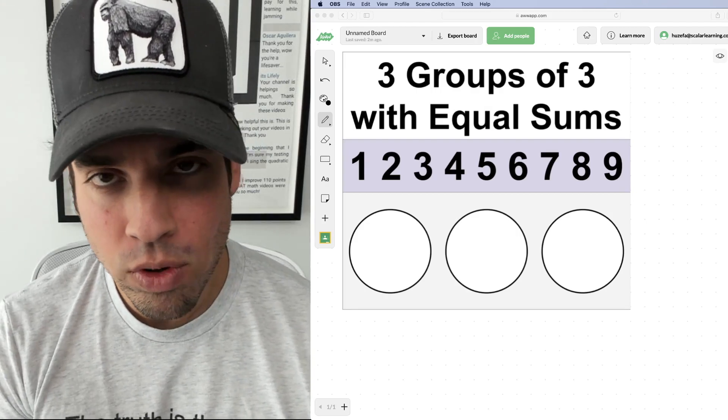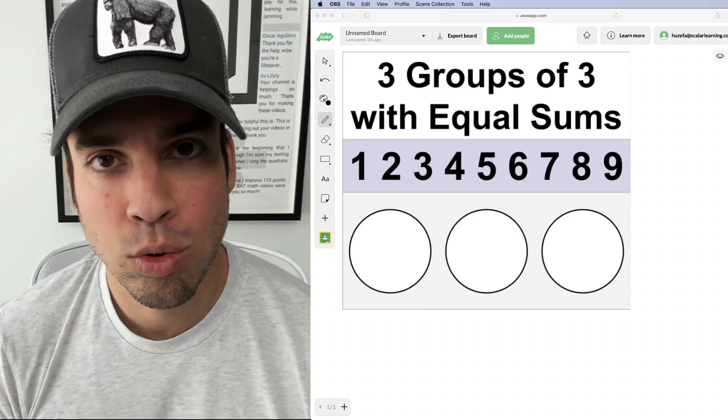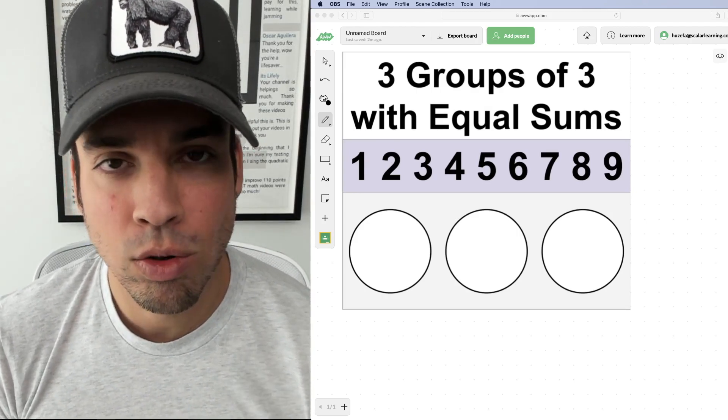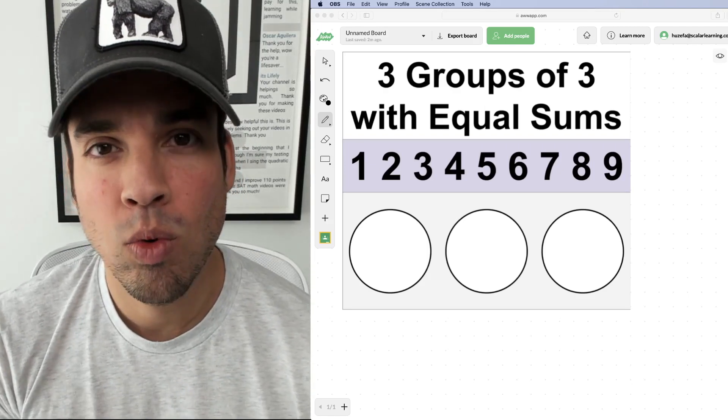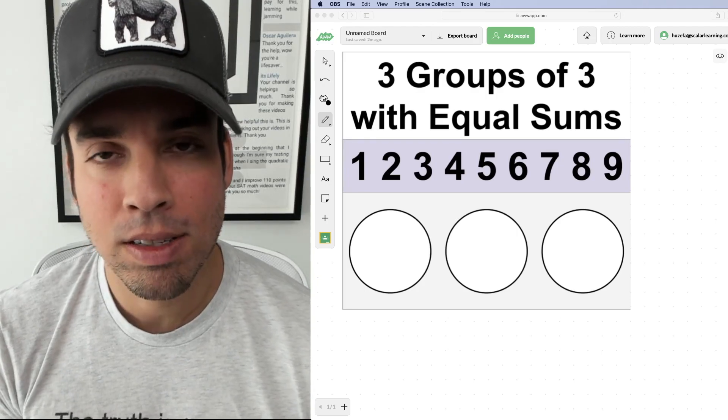We're taking these numbers one through nine and we're dividing them up into three groups of three. So three groups of three numbers each, and the key is that we want each group to have the same sum.